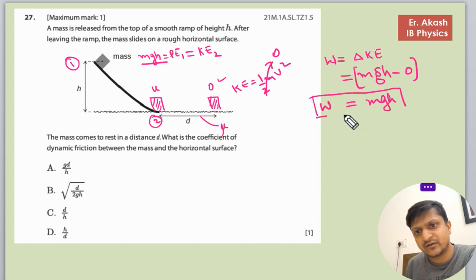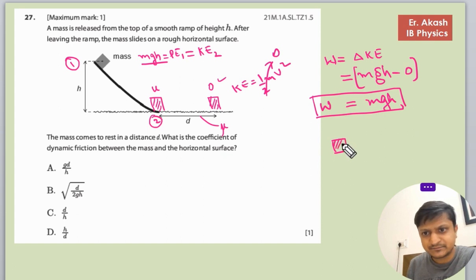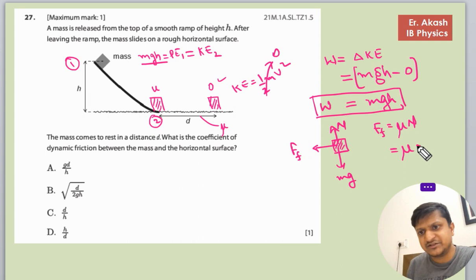We got this from the work-energy theorem. Now we have to see the free body diagram at this level. mg will be here and the normal will be there. When the body moves from this to this, there will be a frictional force. This frictional force will be equals to mu N, which is mu mg. So mu mg will be the force.